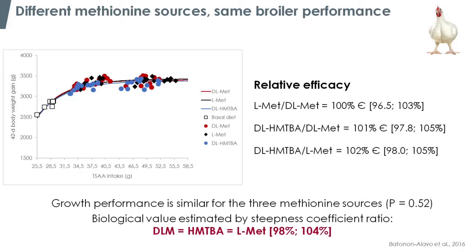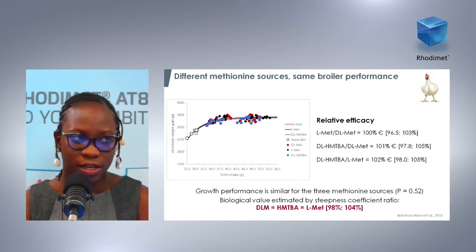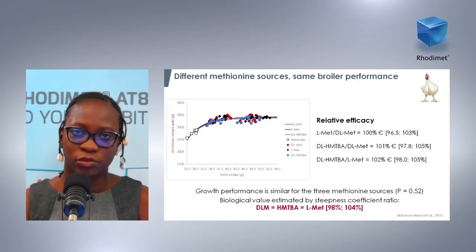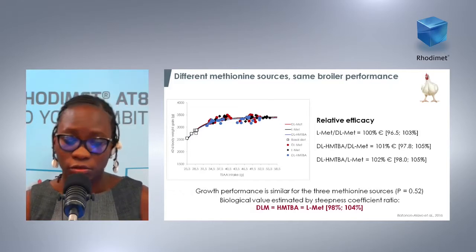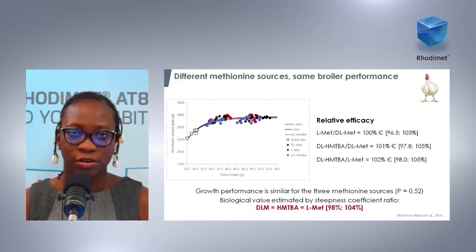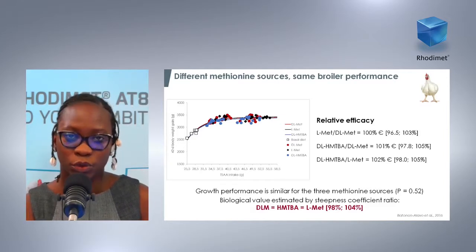We then applied the exponential model I was talking about, and you can see on the right part of the graph that we get the relative bioefficacy values, which are around 100%. In addition to that, we get the confidence interval, which also includes the value 100. Based on that, we can conclude that the three methionine sources — DL-methionine, HMTBA, and L-methionine — are all three equivalent and are 100% efficacious in animals.